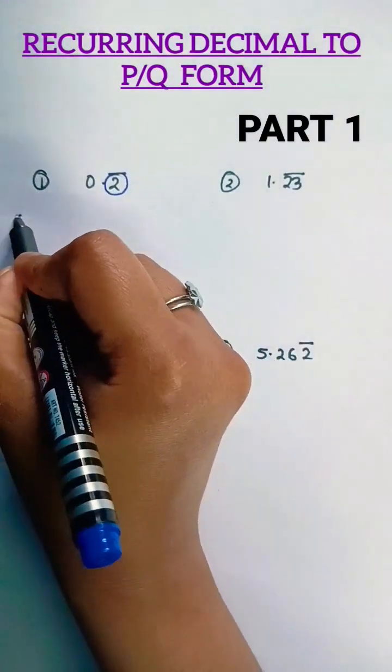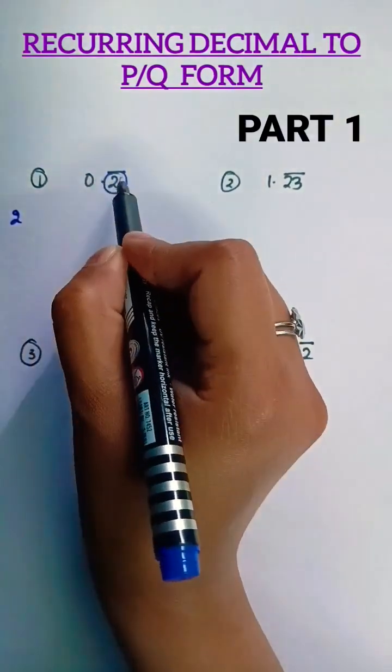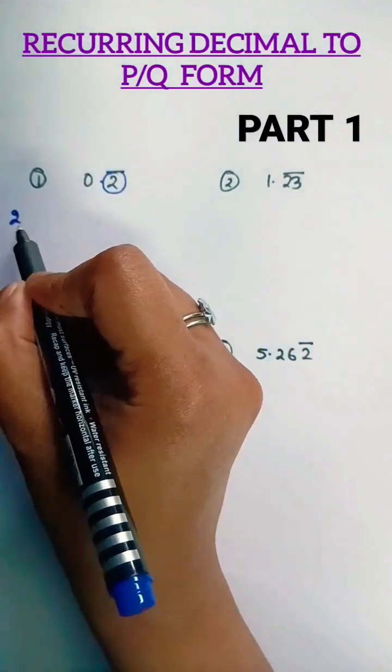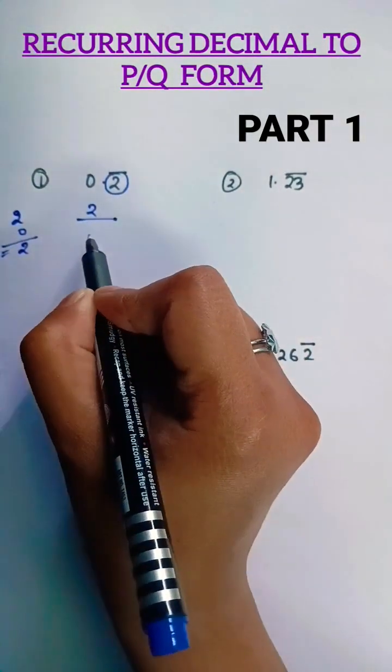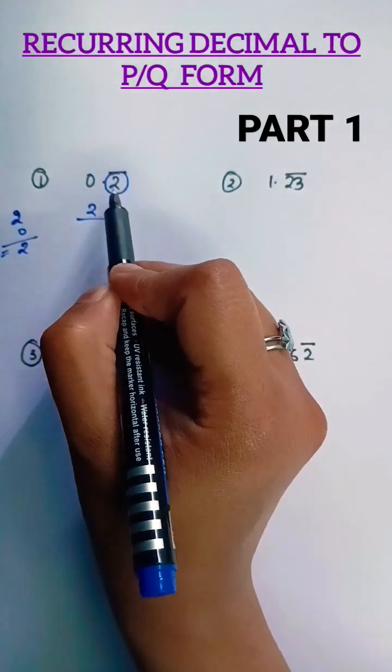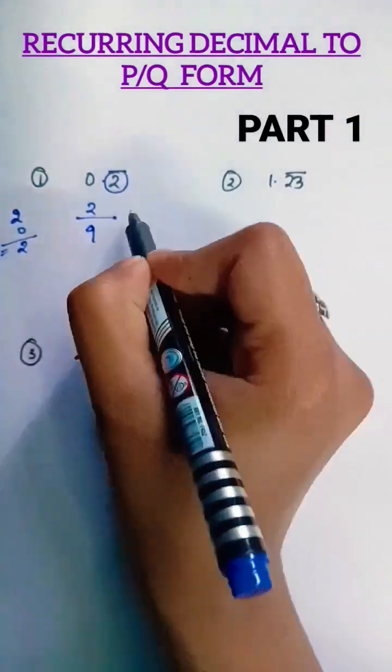You have 2, so just subtract the remaining number from this bar number. So 2 minus 0 is 2, so you will write 2 in the numerator. In the denominator, just count the number of digits under bar. If only one digit, that is 2, so a single 9 will be the answer.